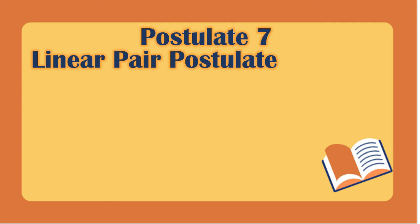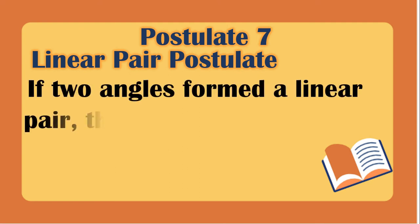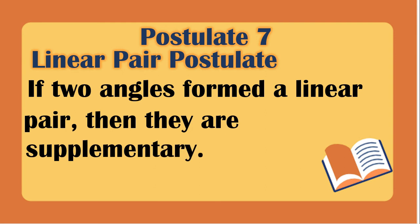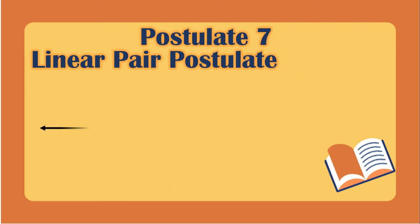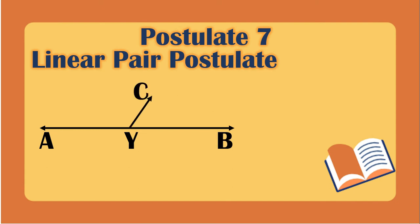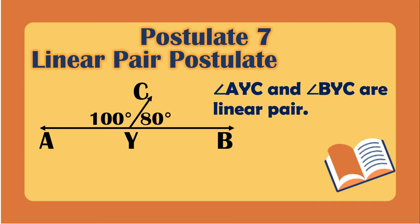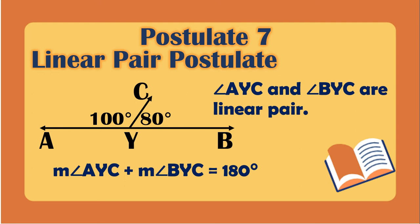Postulate 7, the linear pair postulate: if two angles form a linear pair, then they are supplementary — their sum is 180°. For example, angle AYC is 100° and angle BYC is 80°. They form a linear pair, so 100° + 80° = 180°.